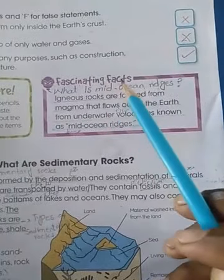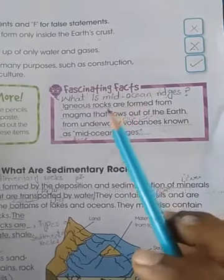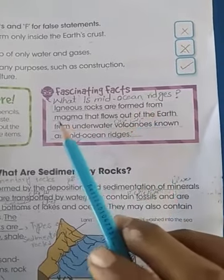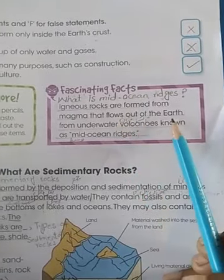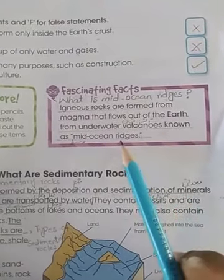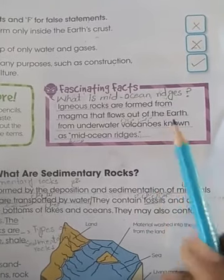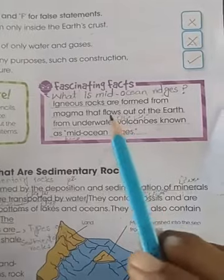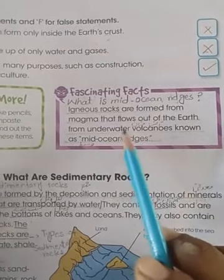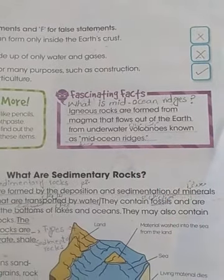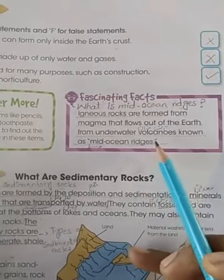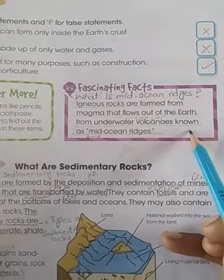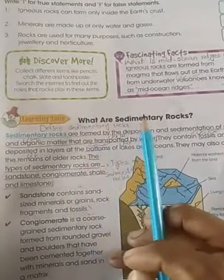Now, what are the fascinating facts? In the fascinating facts section, it says that rocks are formed from magma that flows out of the earth from underwater volcanoes known as mid-ocean ridges.